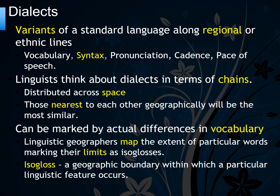Dialects are variants of a standard language along regional or ethnic lines. There are differences in vocabulary, syntax, pronunciation, cadence, and pace of speech. Linguists think about dialects in terms of chains — they're distributed across space.